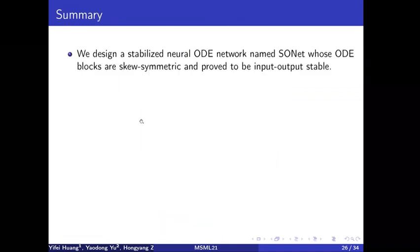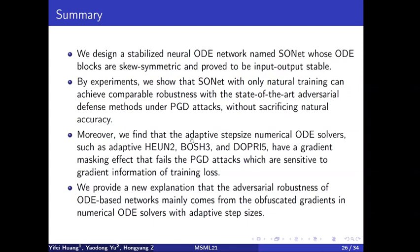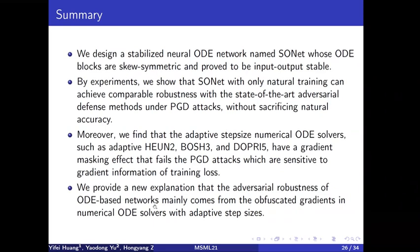In summary, we design a stabilized neural ODE network named ISONet whose ODE blocks are skew-symmetric and proven to be stable. By experiment, we show that ISONet with natural training can achieve comparable robustness to adversarial training at PGD attacks without sacrificing natural accuracy. Moreover, we find that adaptive step-size numerical ODE solvers such as Dopri5 have a gradient masking effect that causes PGD attacks to fail, as PGD is sensitive to gradient information of the training loss. Finally, we provide a new explanation: the apparent robustness of ODE-based networks mainly comes from obfuscated gradients in numerical ODE solvers with adaptive step size.